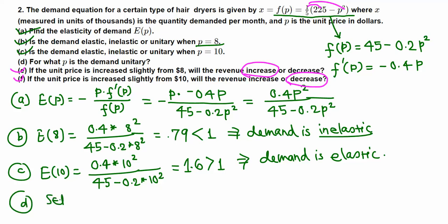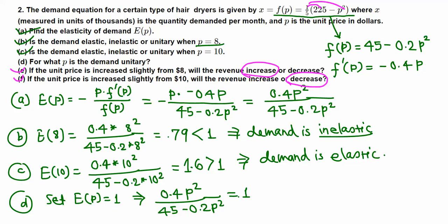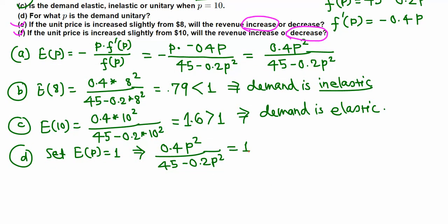Setting E(p) = 1: the fraction 0.4p squared over (45 minus 0.2p squared) equals 1. Writing 1 as 1 over 1 and cross-multiplying, we get 0.4p squared equals 45 minus 0.2p squared. Now we solve this equation for p — there is p squared on both sides.